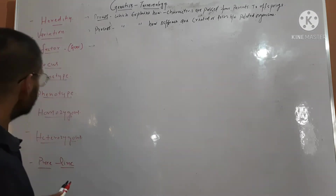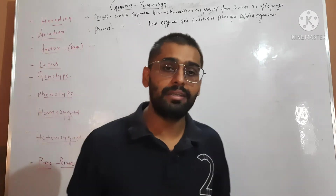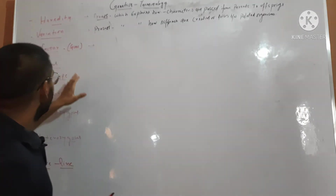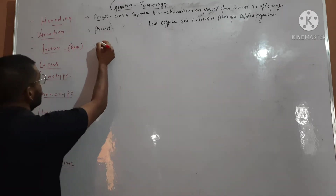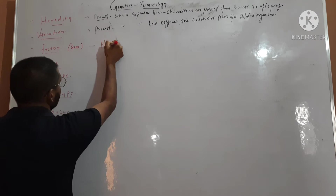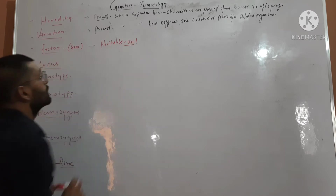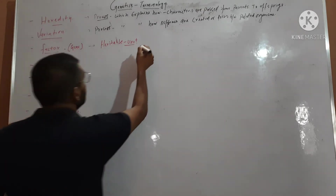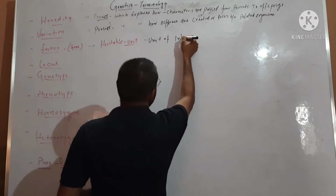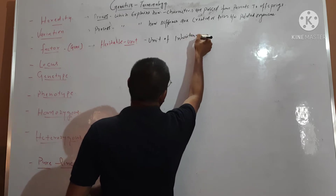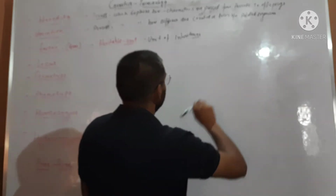Next one is factor or gene. Although Mendel in his studies never mentioned the term gene. So what is factor? Factor is a heritable unit, or you can say unit of inheritance, which is passed from parents to offspring.